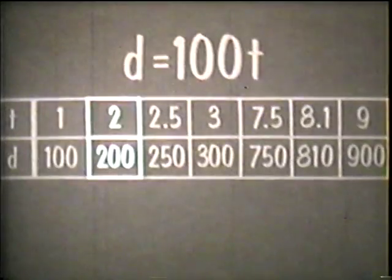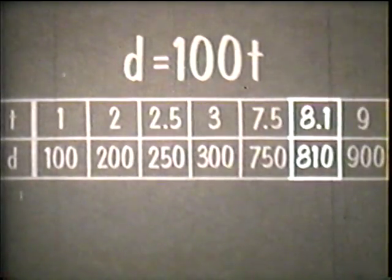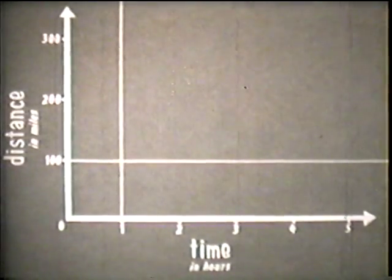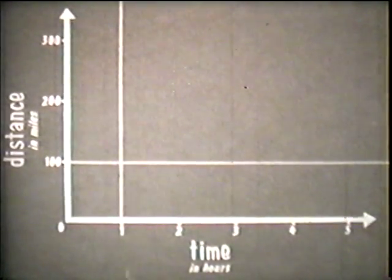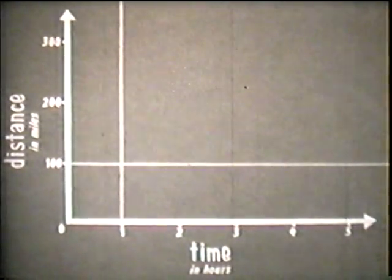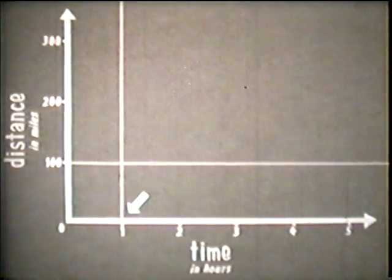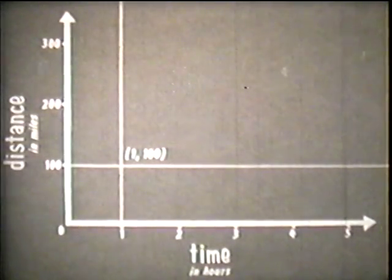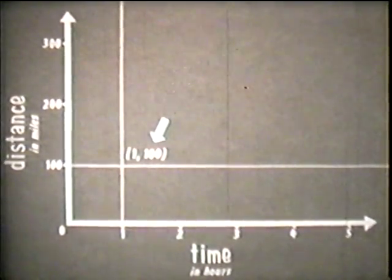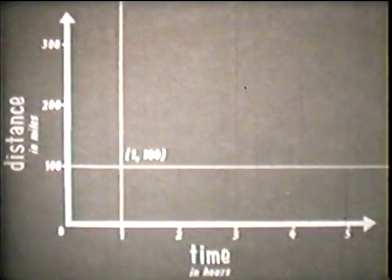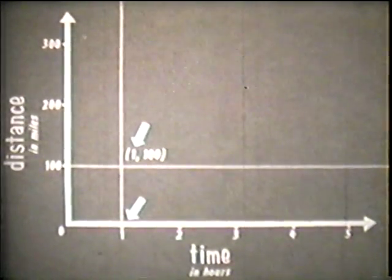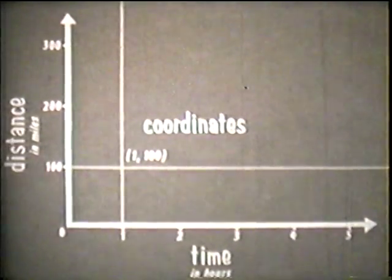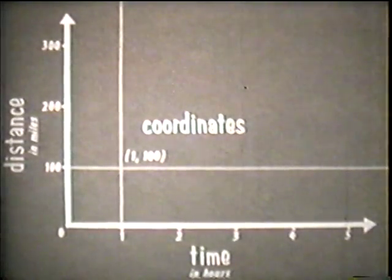Using these coordinate axes, we can graph the pairs of numbers that satisfy the relationship between the two variables in our equation. To graph the first pair of numbers, we use a pair of perpendicular lines to mark distances along the axes. One line goes through the point on the time axis representing a time of one hour; the other goes through the point on the distance axis representing a distance of 100 miles. The point located by the intersection of these lines represents the ordered pair 1 and 100. These numbers are called an ordered pair because the order is as important as the numbers — the number along the horizontal axis is always written first, and the number along the vertical axis is always written second. These numbers are called the coordinates of the point.